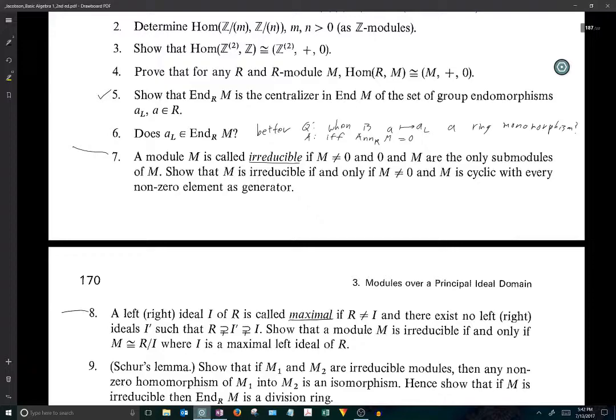Let's see here. Here it is. When is the map which sends a to a_L a ring monomorphism—so an injective homomorphism? The answer would be that this is true if and only if the annihilator is zero.